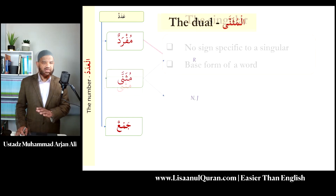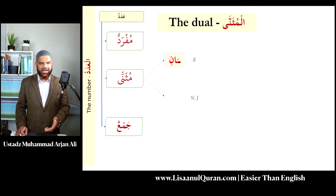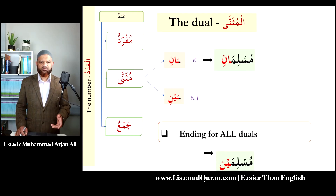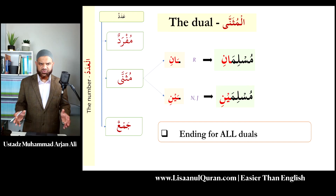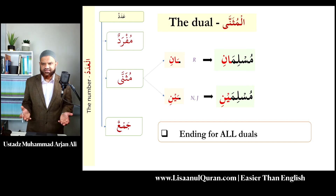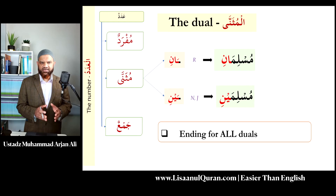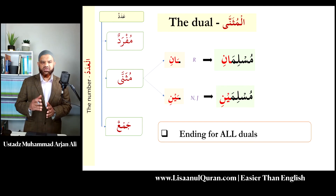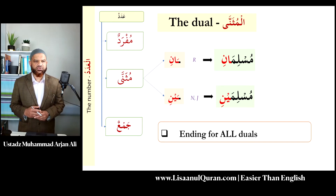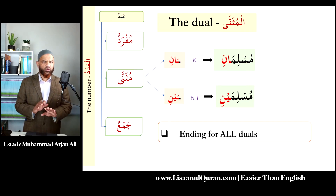The duals are very easy — they conform to only two endings: 'ani' in the rafa, and 'aini' in the nasab or jar. So 'Muslimani' and 'Muslimaini'. Any ism that is dual in Arabic will come across only these two endings — there is no exception. So 'aani' and 'aini' are the only two endings you need to worry about for duals, and that is it. There is nothing more complex about duals.